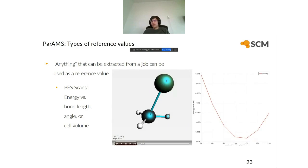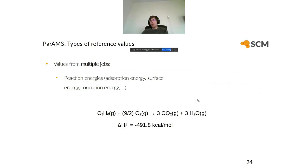The third type of training data is PES scans — energy versus some bond length, angle, or cell volume. For example, with chloromethane, you can scan an angle and look at the energy as a function of that angle, which you can input into PARAMS. The fourth type is values from multiple jobs — typically reaction energies like adsorption energies, surface energies, or formation energies. For example, the combustion of propene in oxygen giving CO2 and H2O has some reaction enthalpy, and this can also be used as training data.